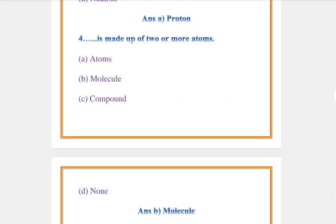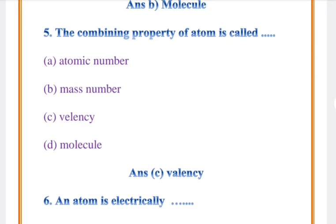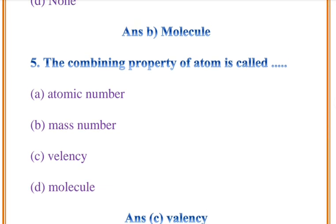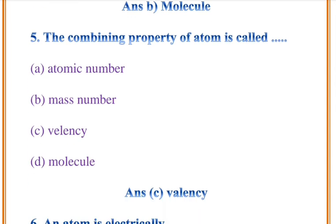Question number 4: Das is made of two or more atoms. Answer: B, Molecule. Question number 5: The combining property of atom is called valency.